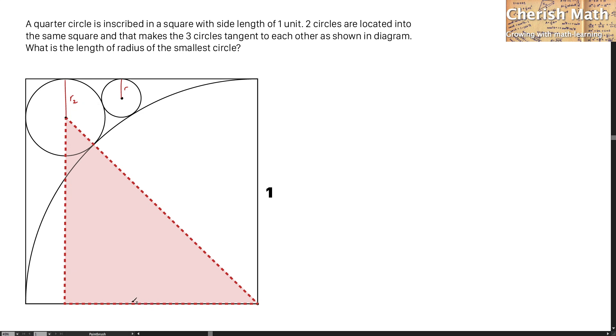The horizontal length of this red triangle is 1 minus R2 and for the vertical length it's going to be 1 minus R2 as well. Well, for this diagonal, that is going to be 1 plus R2 and it is a right angle.